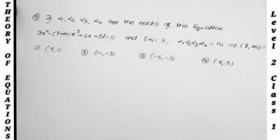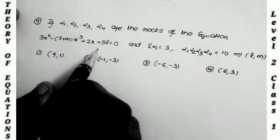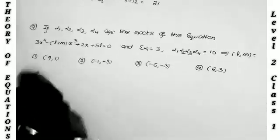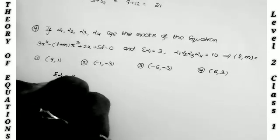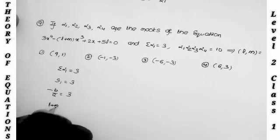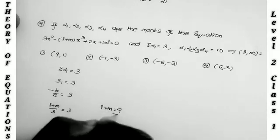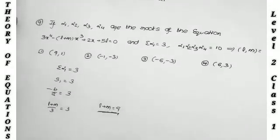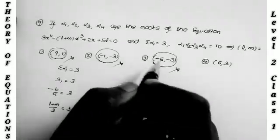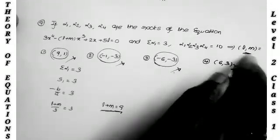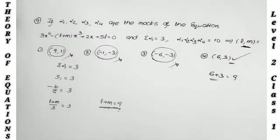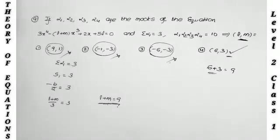If alpha1, alpha2, alpha3, alpha4 are roots of 3x⁴ minus (l plus m)x³ plus 2x plus 5 equals 0, and sigma alpha equals 3 and the product alpha1·alpha2·alpha3·alpha4 equals 10, find values of l and m. S1 equals minus B by A: l plus m by 3 equals 3, so l plus m equals 9. Checking options: 6 plus 3 equals 9. Therefore l equals 6 and m equals 3. I will continue the remaining sums in the next video.